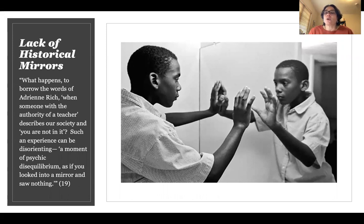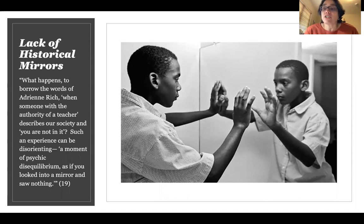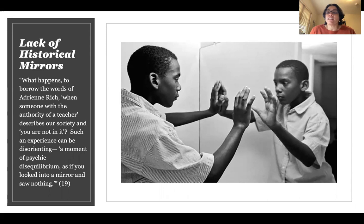Takaki also talks about what happens for those populations that don't fit into that white American cultural vision and image — what happens to those populations when they're learning history in mainstream educational institutions. He draws from this quote from Adrienne Rich: 'What happens when someone with the authority of a teacher describes our society and you are not in it? Such an experience can be disorienting — a moment of psychic disequilibrium, as if you looked into a mirror and saw nothing.' You really need to think about what it means when you don't see yourself, don't see your own stories reflected in the history that is told about this country, and whether that matters.